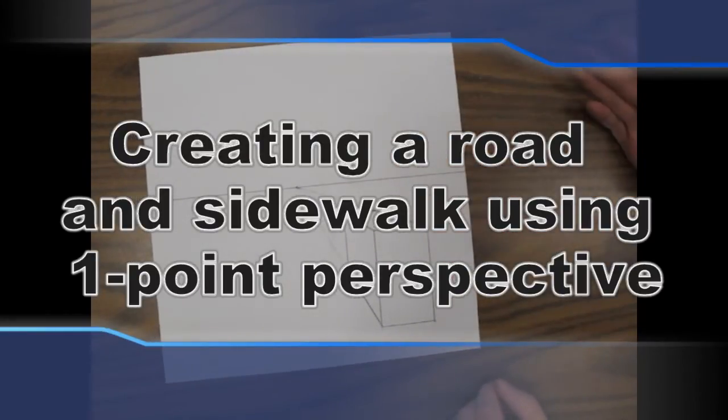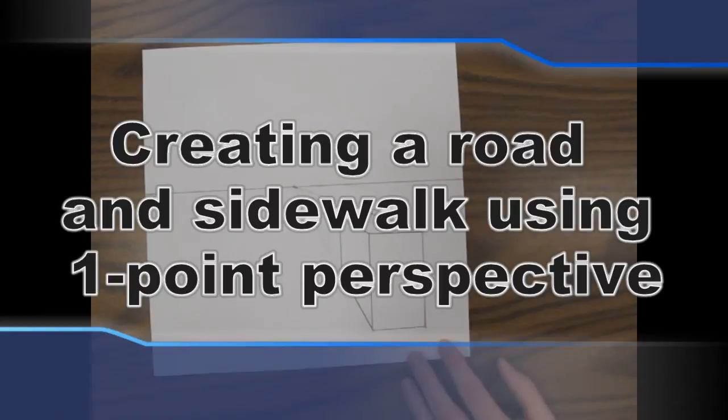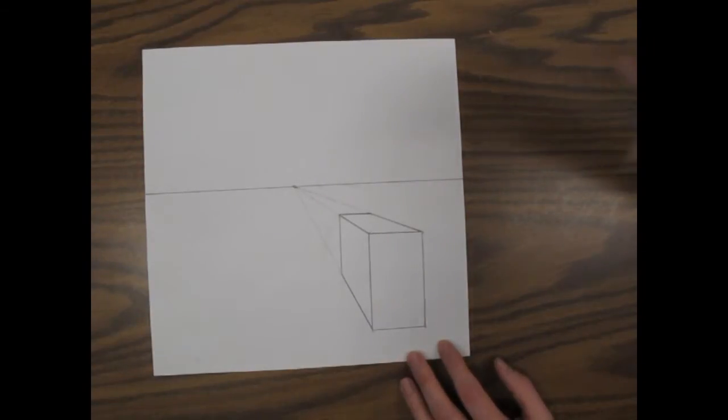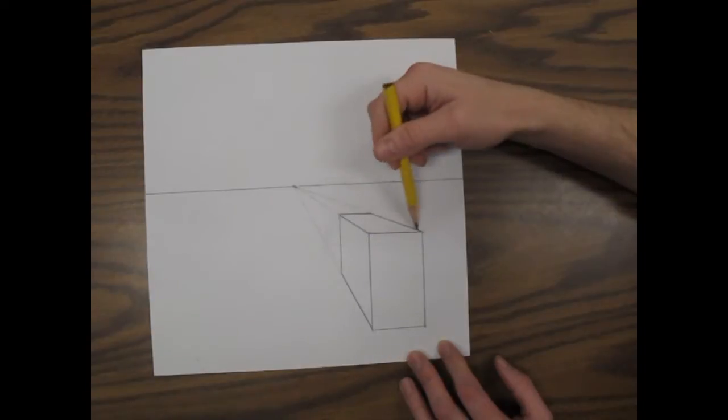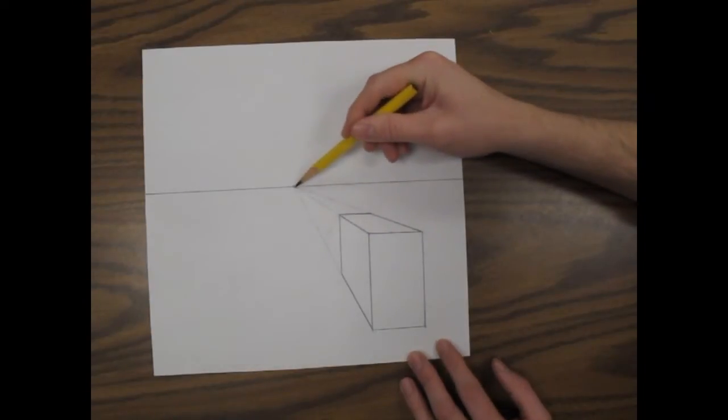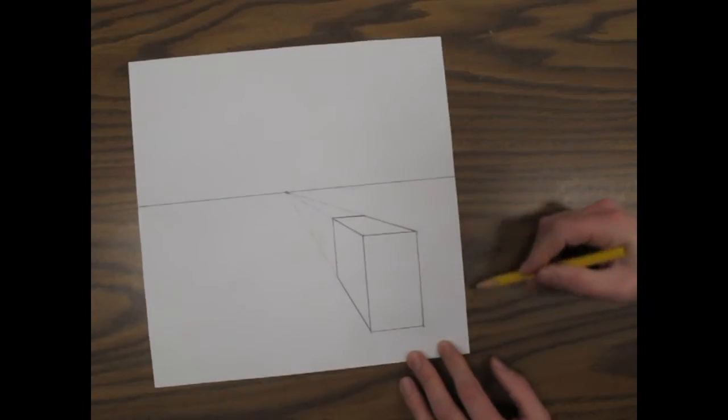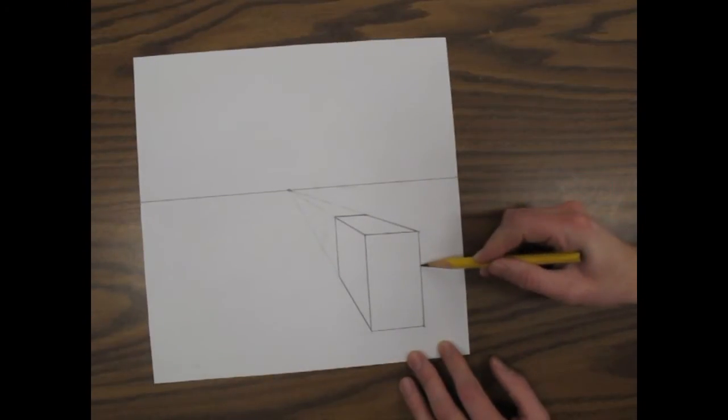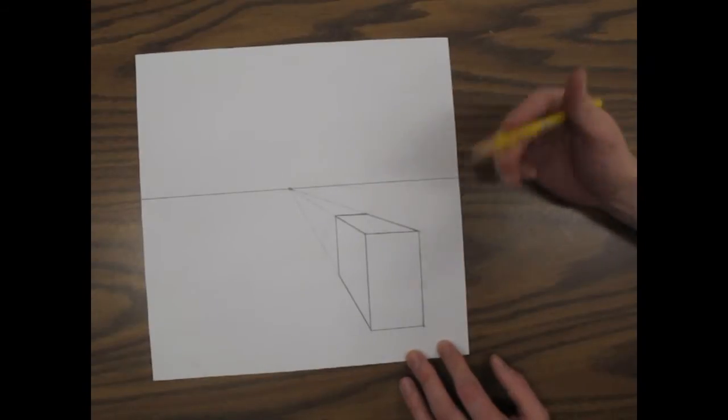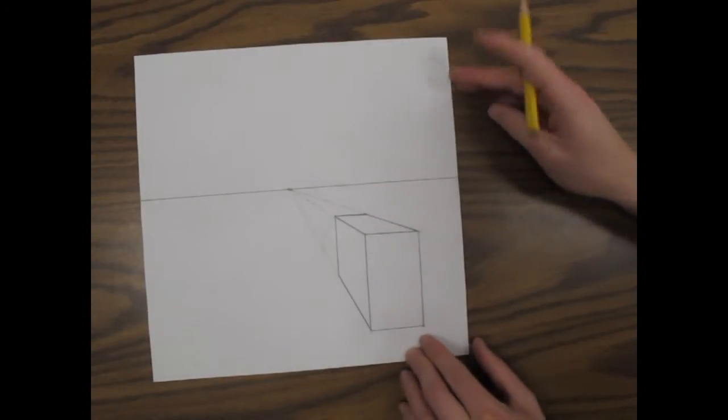Now that we've learned the basics of one-point perspective - you only have three lines: vertical, horizontal, or diagonal that goes to the vanishing point, and you need parallel lines to the edge of your page and to each other - it's time to start making our city.